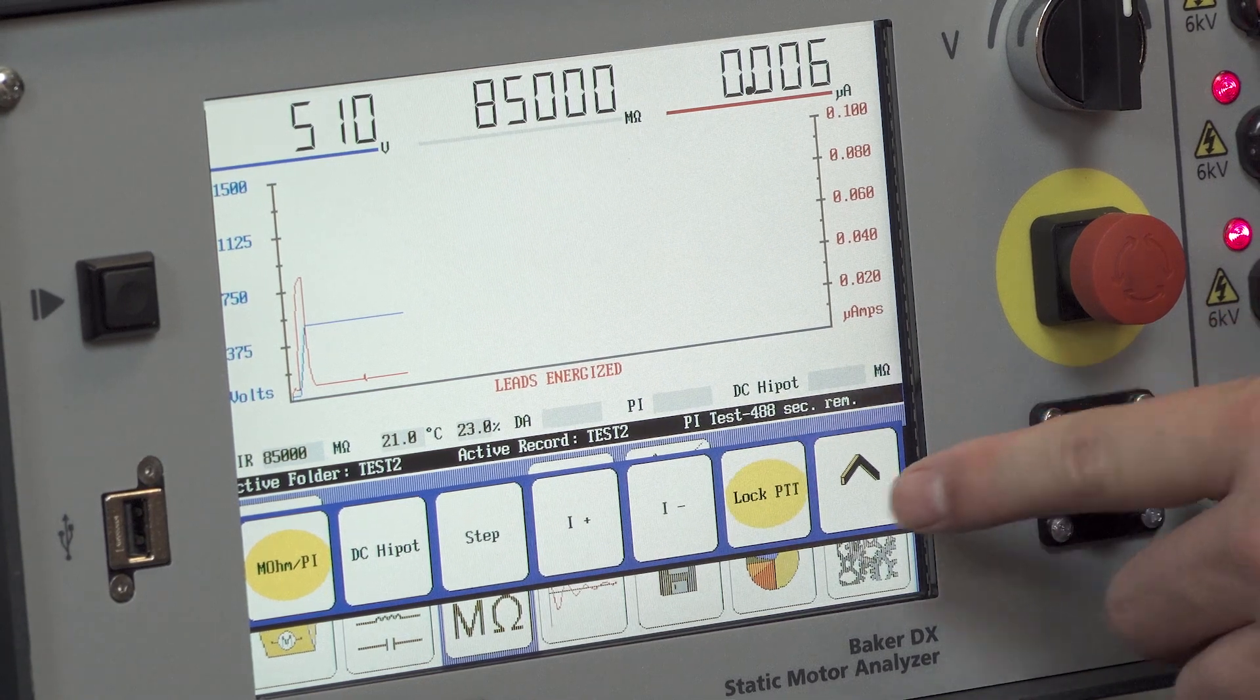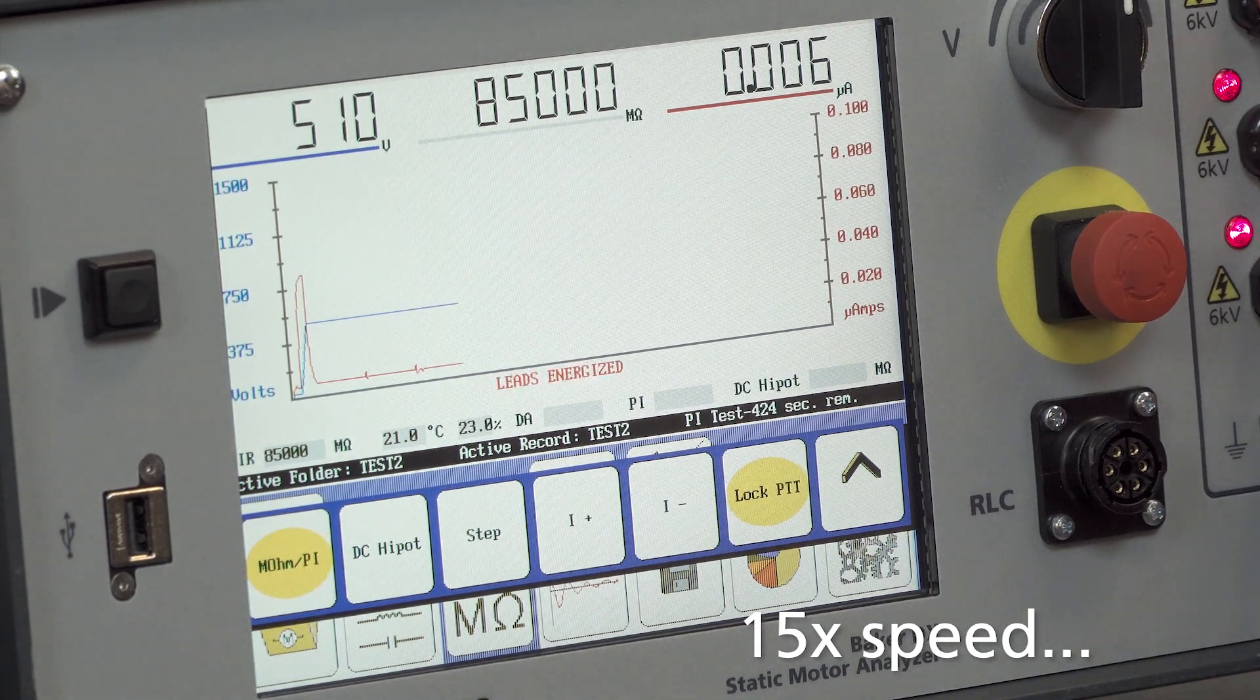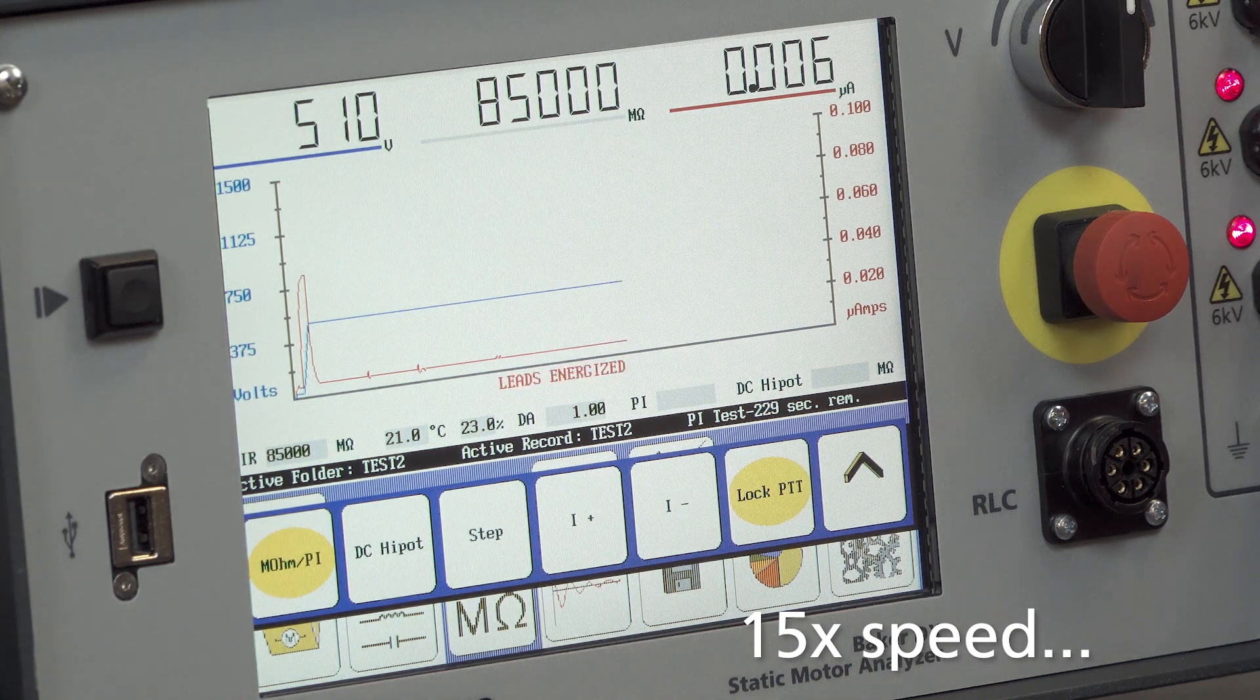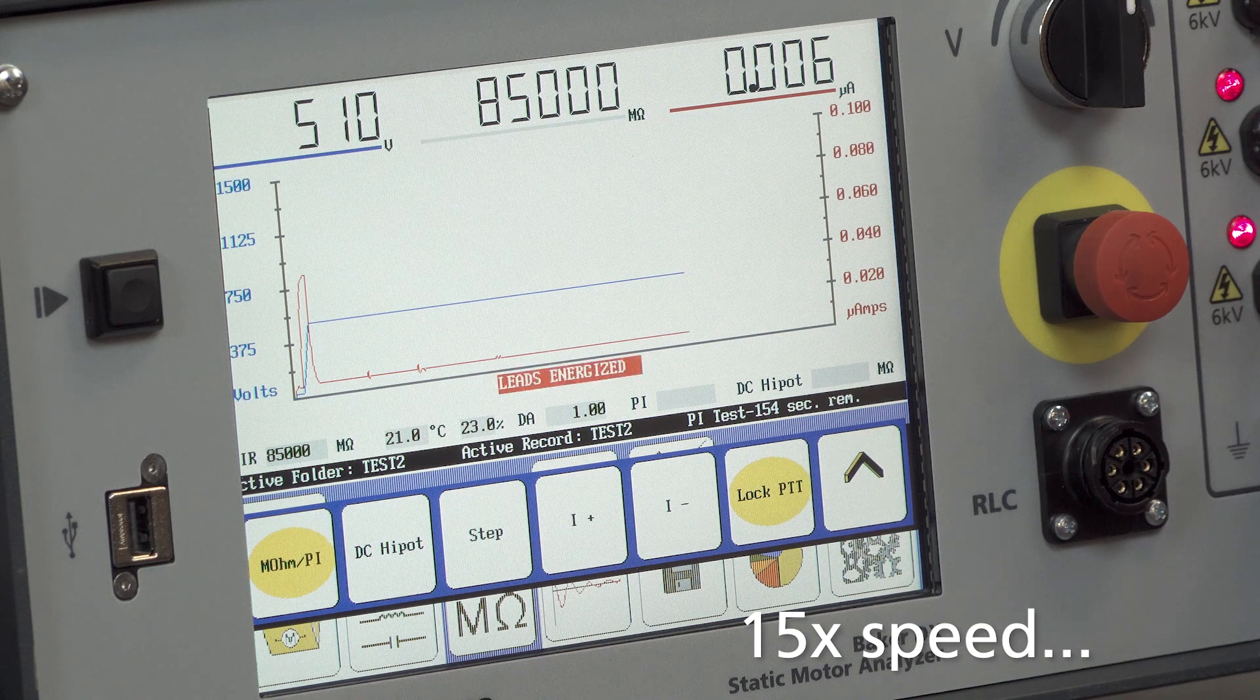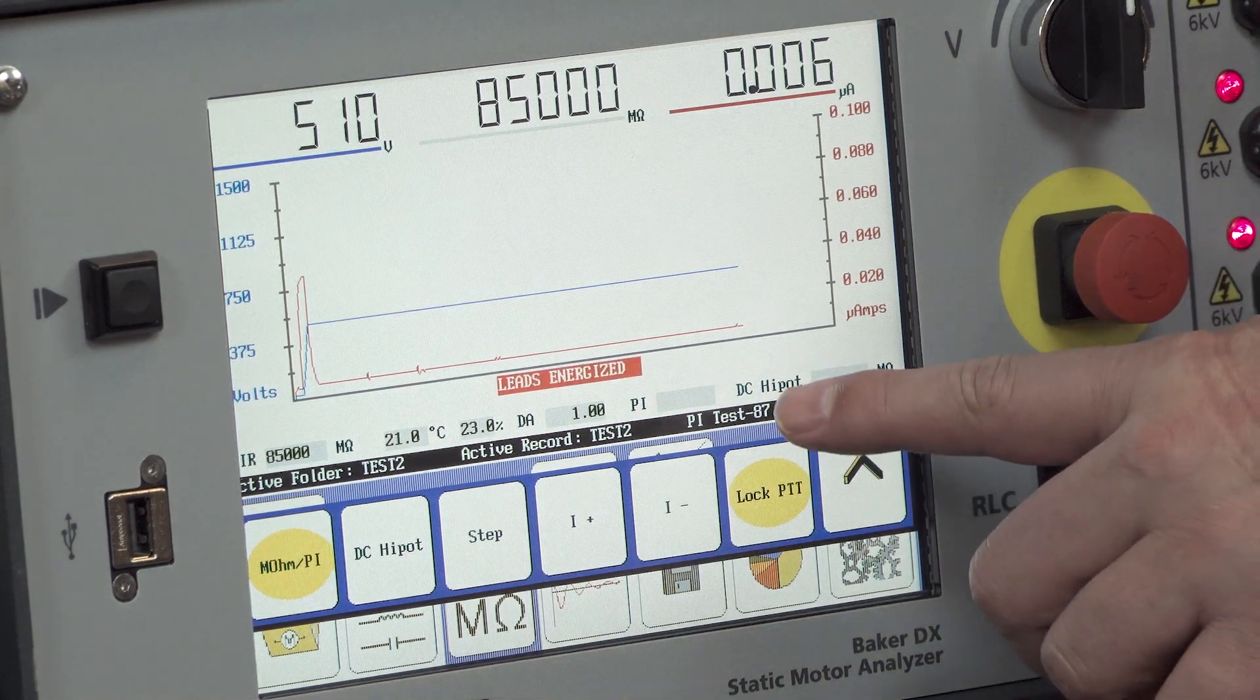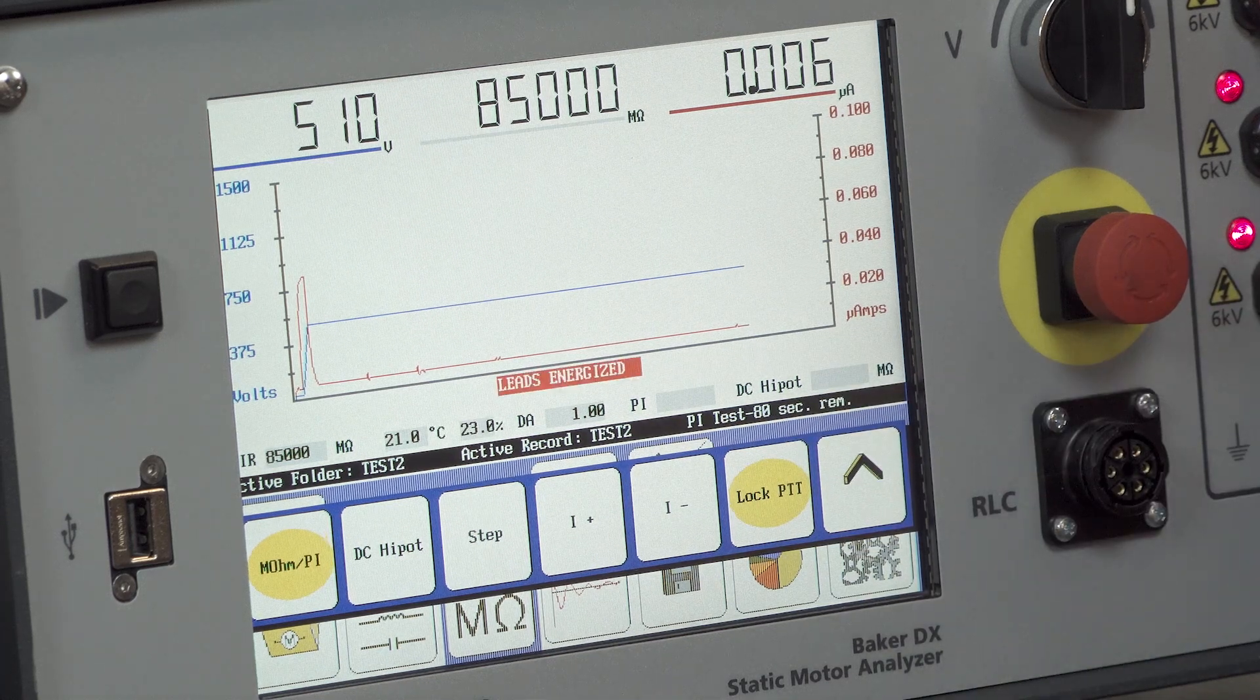Now we can see the PI test timer ticking down from 10 minutes or 600 seconds. As we're reaching the end of the PI test now, you can see our timer is almost complete. The DA ratio was populated, and of course once we complete the full 10 minutes, the PI ratio will be populated.